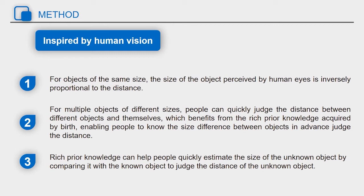Second, for multiple objects of different size, people can quickly judge the distance between the different objects and them based on their size, which benefits from the visual prior knowledge acquired by birth, enabling people to know the size difference between objects, and otherwise judge the distance. Third, this prior knowledge can help people quickly estimate the size of the unknown object by comparing it with the known object to judge the distance of the unknown object.